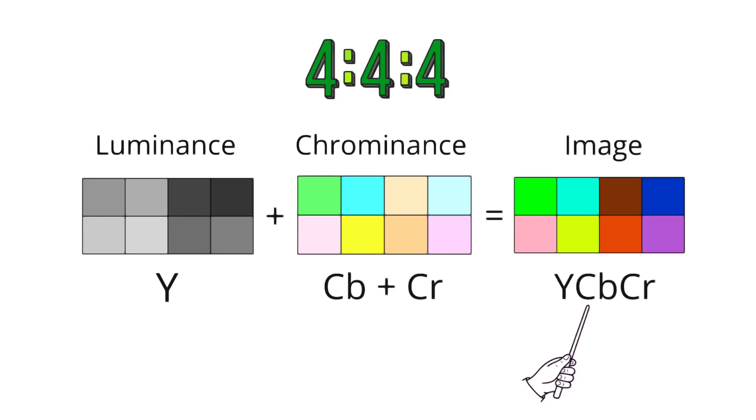On the right, the combination of the Y, CB, and CR components forms the full color YCbCr image. When the luminance and chrominance components are combined, they produce a complete color image as perceived by the human eye.